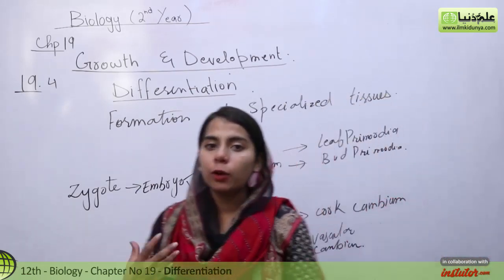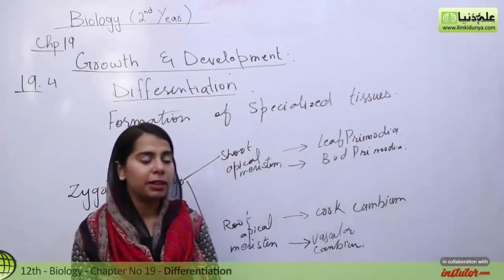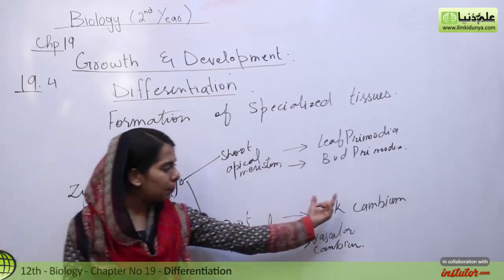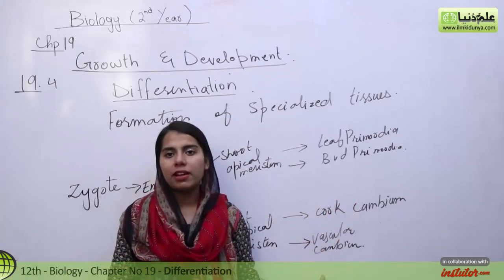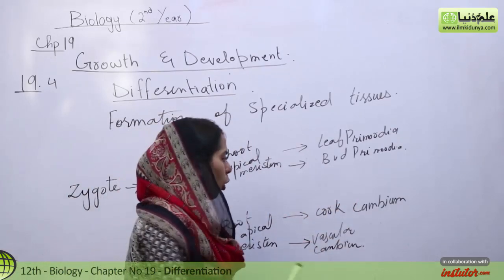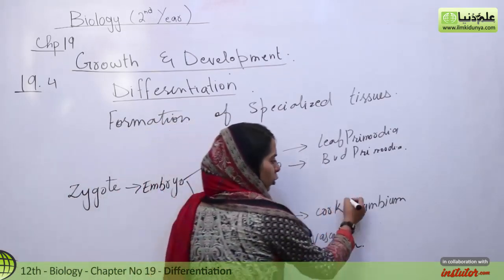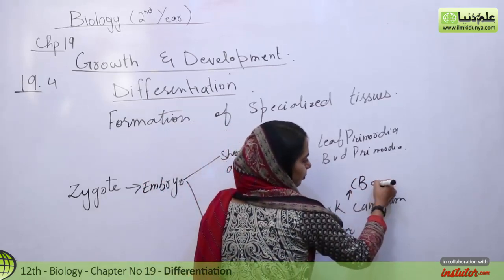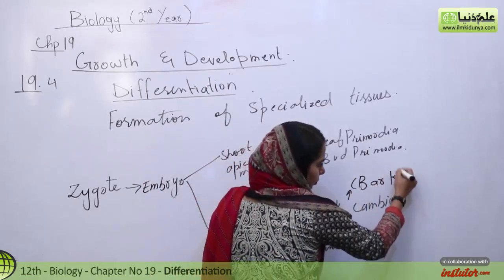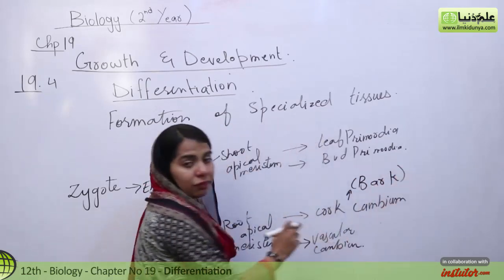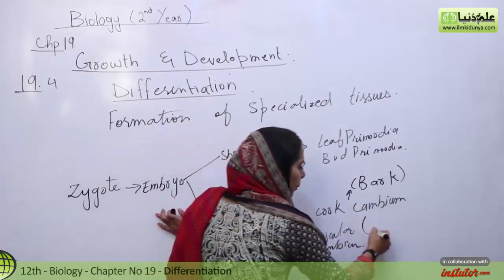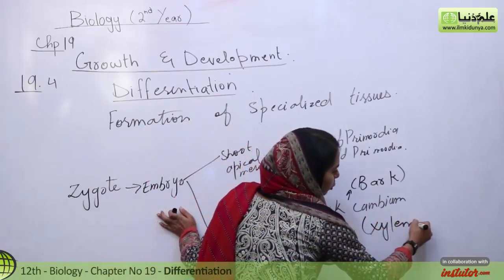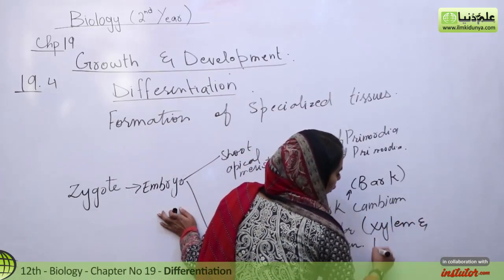If we talk about the root system, in the root system what happens is cork cambium and vascular cambium form. The cork cambium is called bark, and the vascular cambium produces xylem and phloem, which are responsible for water and food transport.